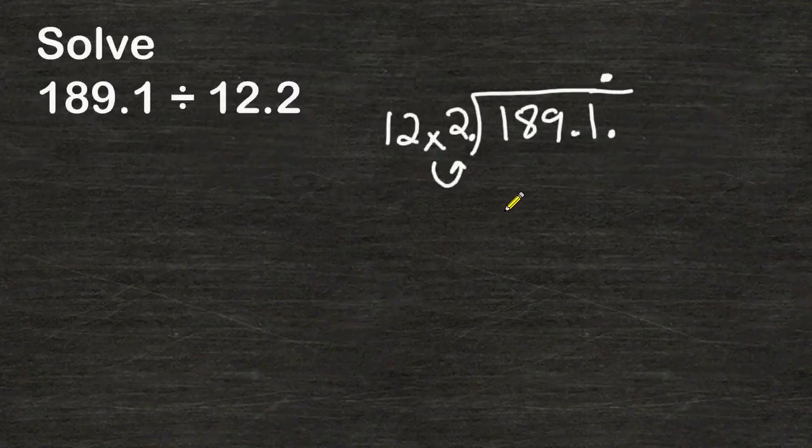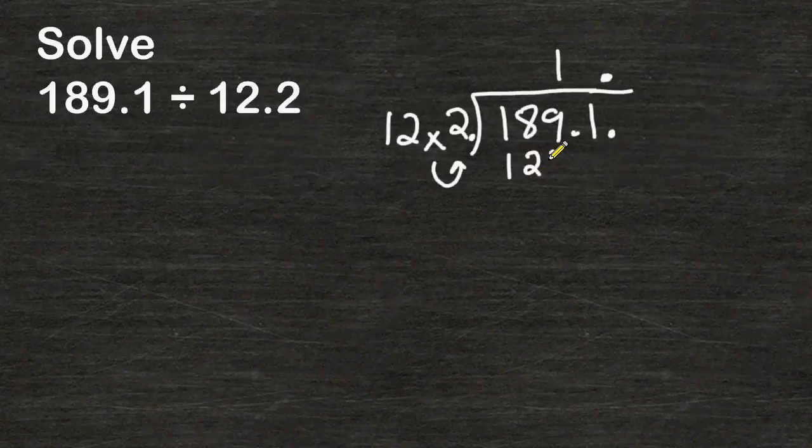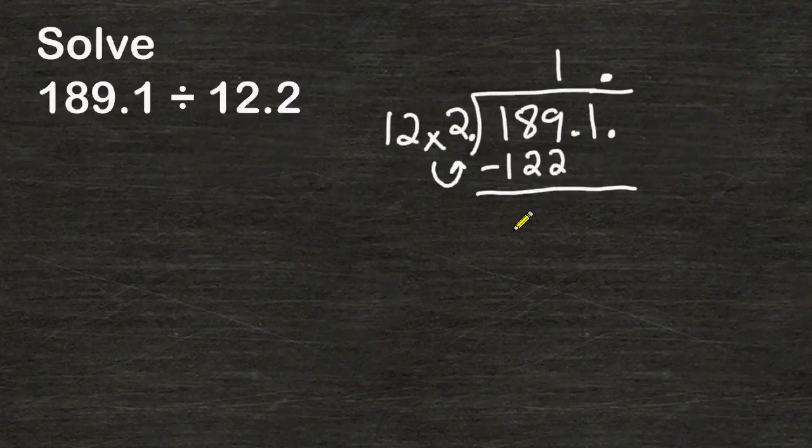Now we simply follow the steps to division. 122 can be divided into 189 one time. One group of 122 is 122. So we subtract 122 from 189 and that gives us a difference of 67.